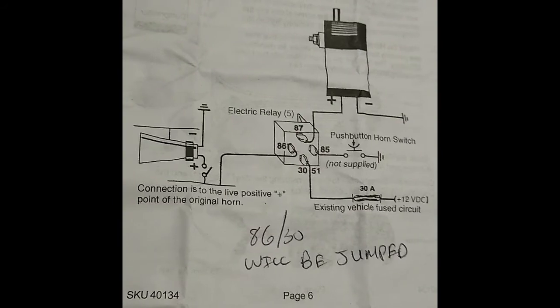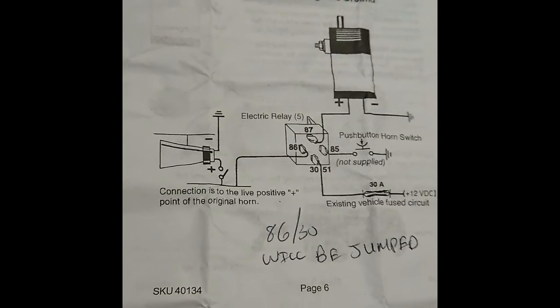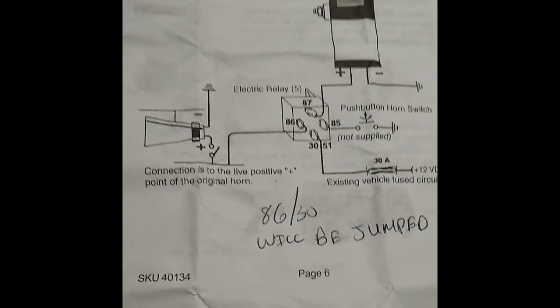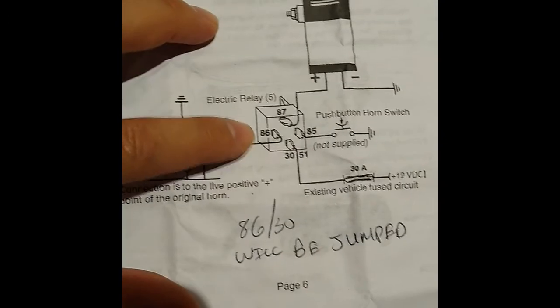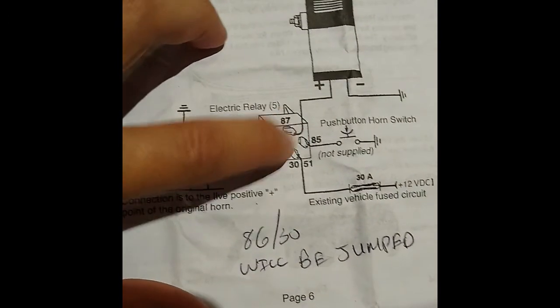I did some searches online, and very difficult to understand this diagram. I just thought, man, something just doesn't make sense with this diagram. So basically, with their relay, you have 86, 87, 85, and 30.